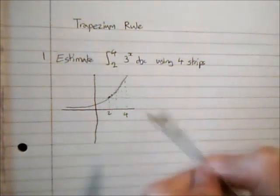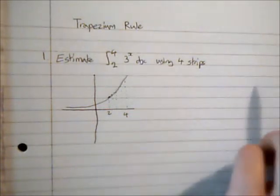So the number of trapeziums we are going to use is what's known as the number of strips. So four strips means basically four trapeziums.